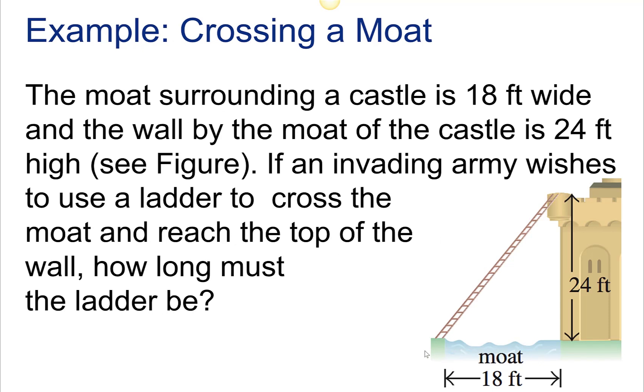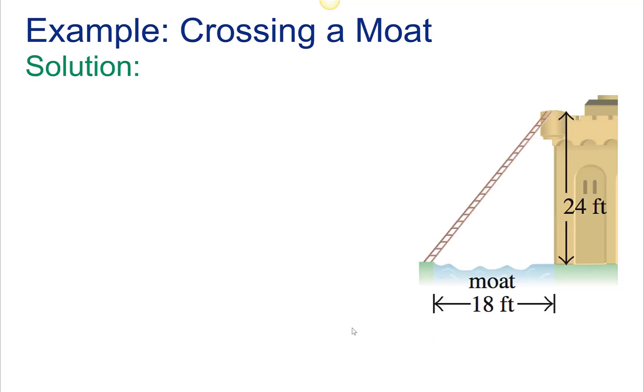The moat surrounding a castle is 18 feet wide, filled with water. The wall of the moat is 24 feet high. If an invading army wishes to use a ladder to cross the moat and reach the top of the wall, how long does that ladder have to be? This makes a nice right triangle, so we can use the Pythagorean theorem.